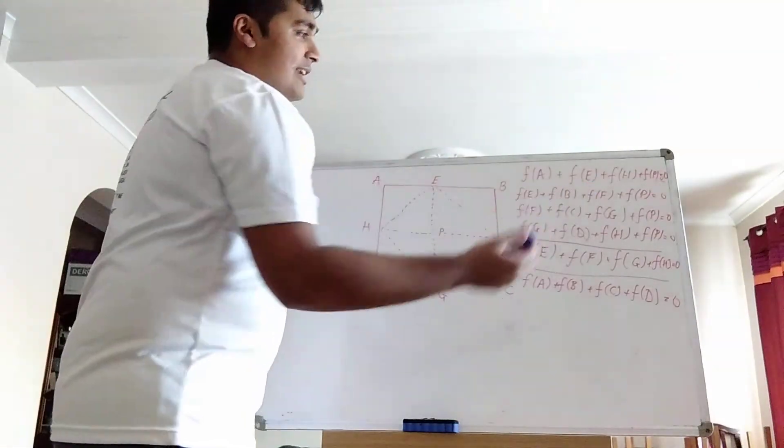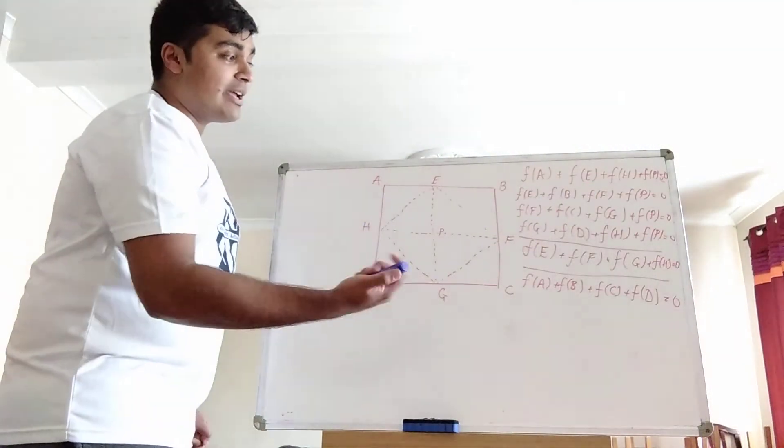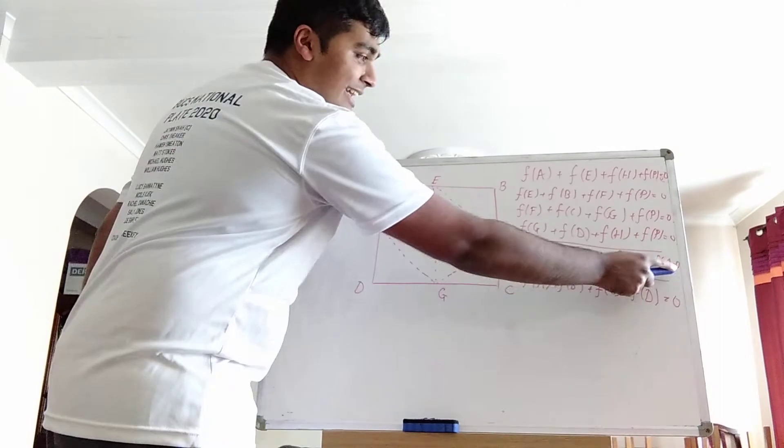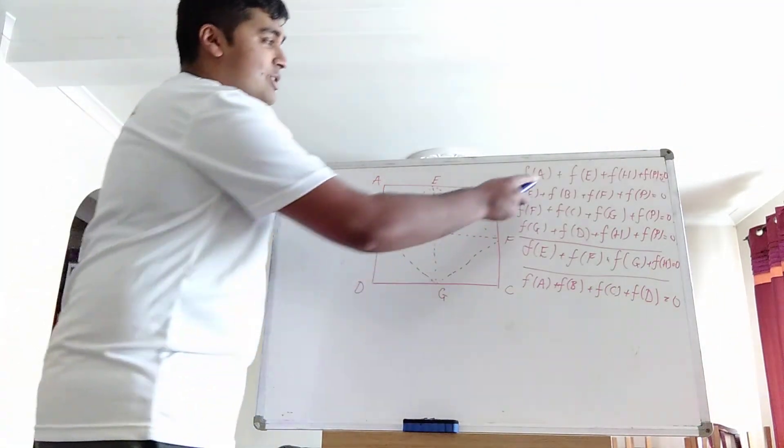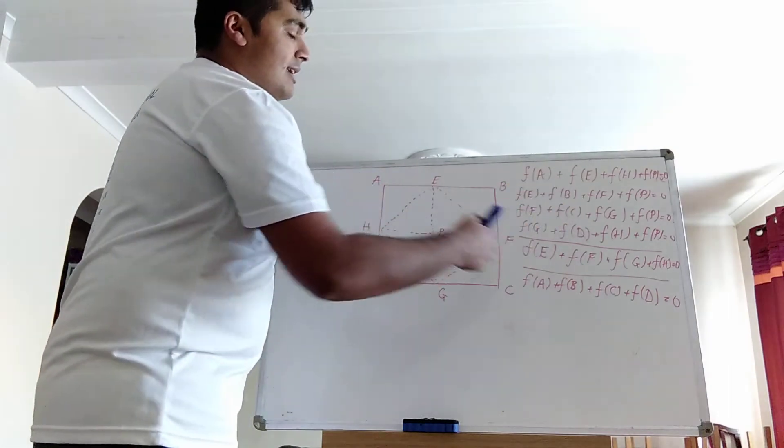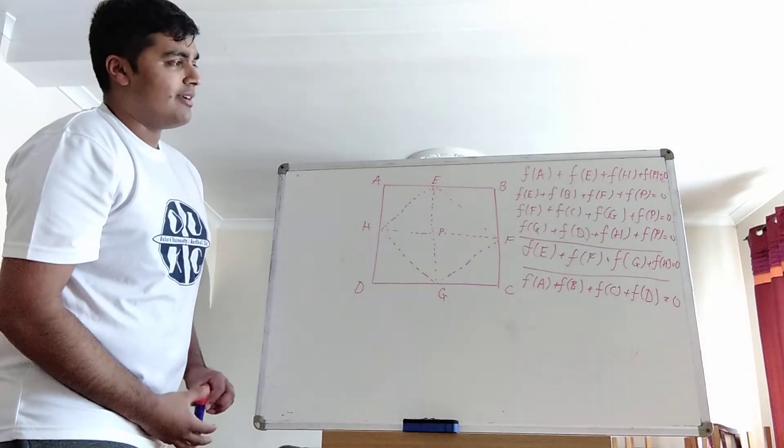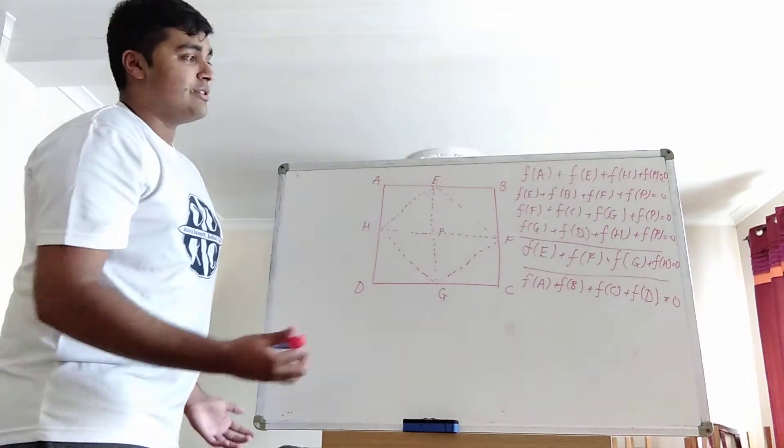And again, if you look here, we've got e, f, g, and h each appearing twice. The only other equation we have involving them is this one here. And again, if we add them up, they all vanish. So it seems as if we should do something with these equations. Perhaps if we add them up, we'll get some nice cancellation. And that's exactly what we do.